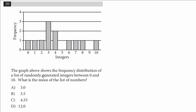The graph above shows the frequency distribution of a list of randomly generated integers between 0 and 10. What is the mean of the list of numbers? So just to review, mean is the same as the average, defined as the total or sum of all terms divided by the number of terms. What makes this problem a little confusing is we have the frequency in numbers, but the integers are also numbers. So just be careful here.